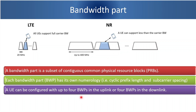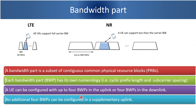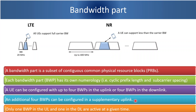Up to Release 16 of 5G, a UE can be configured with up to 4 bandwidth parts. The maximum number of BWPs possible is 4 in both directions — that is, 4 in uplink and 4 in downlink. 4 BWPs are also possible in supplementary uplink. However, at any moment in time only 1 BWP will be active in uplink and 1 in downlink.